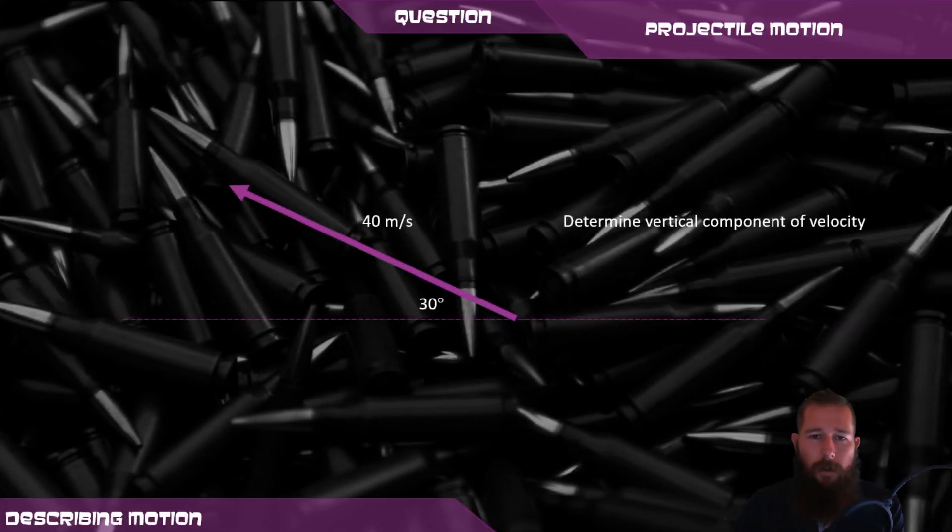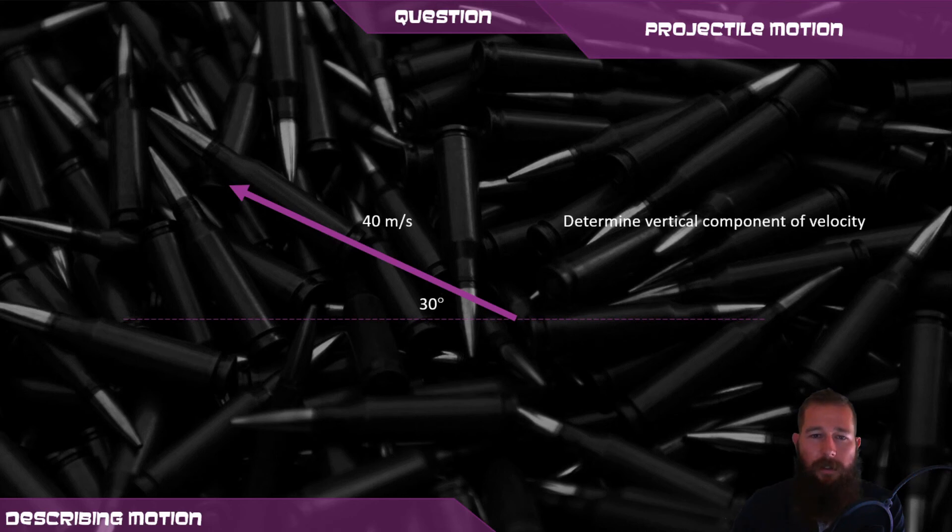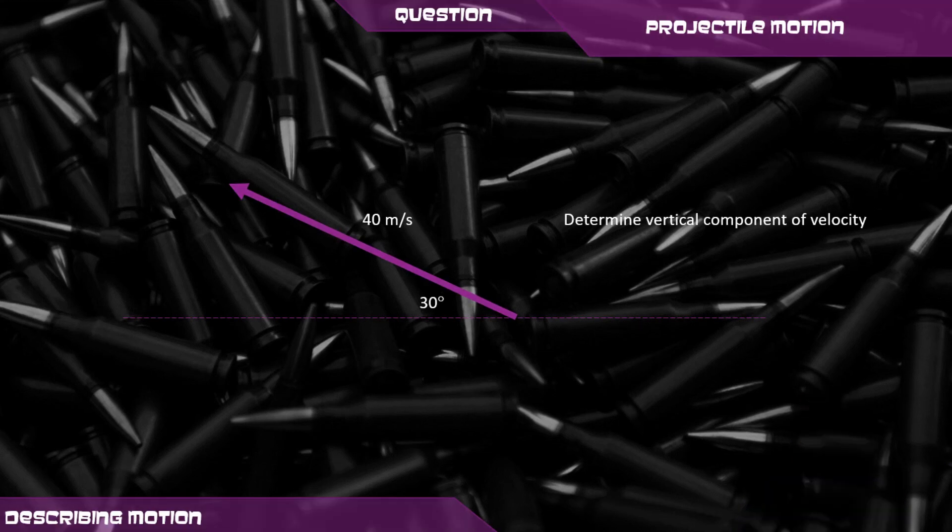With this question, I'd like you to determine the vertical component of the velocity using the equations that we had on the previous slide. Take your time. Feel free to use any resources that you have. Open book to get through this. Thank you.